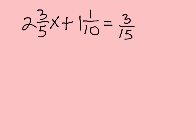2 and 3/5 X plus 1 and 1/10 equals 3/15. So let's take a look at this. So 2 times 5 is 10, so that's 13X over 5. And pause it if you haven't done so already, so you can see if you can do this.